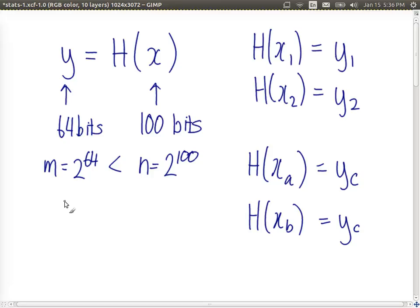Given that, we can calculate approximately how many on average inputs map to the same hash value. It is n divided by m, or in our case, 2 to the power of 100 divided by 2 to the power of 64, which is 2 to the power of 28, or approximately 6 by 10 to the power of 10.